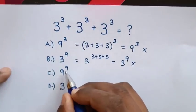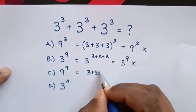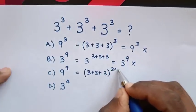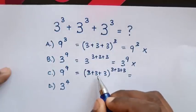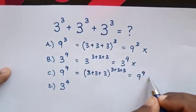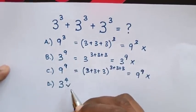From C, 9⁹ equals (3+3+3)^(3+3+3) = 9⁹, which is also wrong. So the remaining answer can be B.